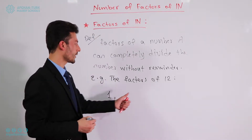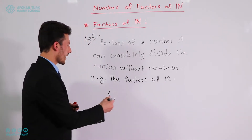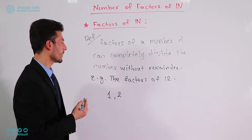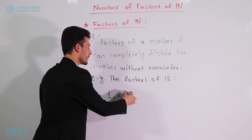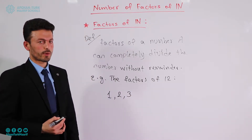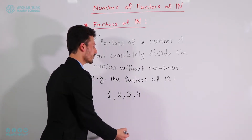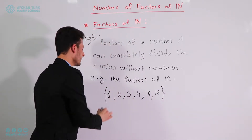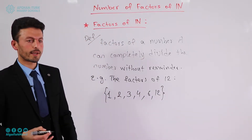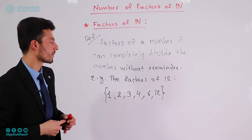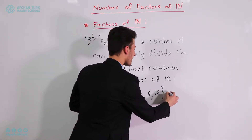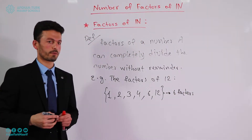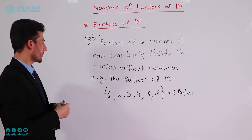After 1, we have 2 — we can divide 12 by 2 and the remainder will be 0. Then 3 is also a factor of 12, and we also have 4, 6, and 12. These are all the factors of 12, as 12 is divisible by each of these numbers. So we can see that 12 has 6 factors in total.